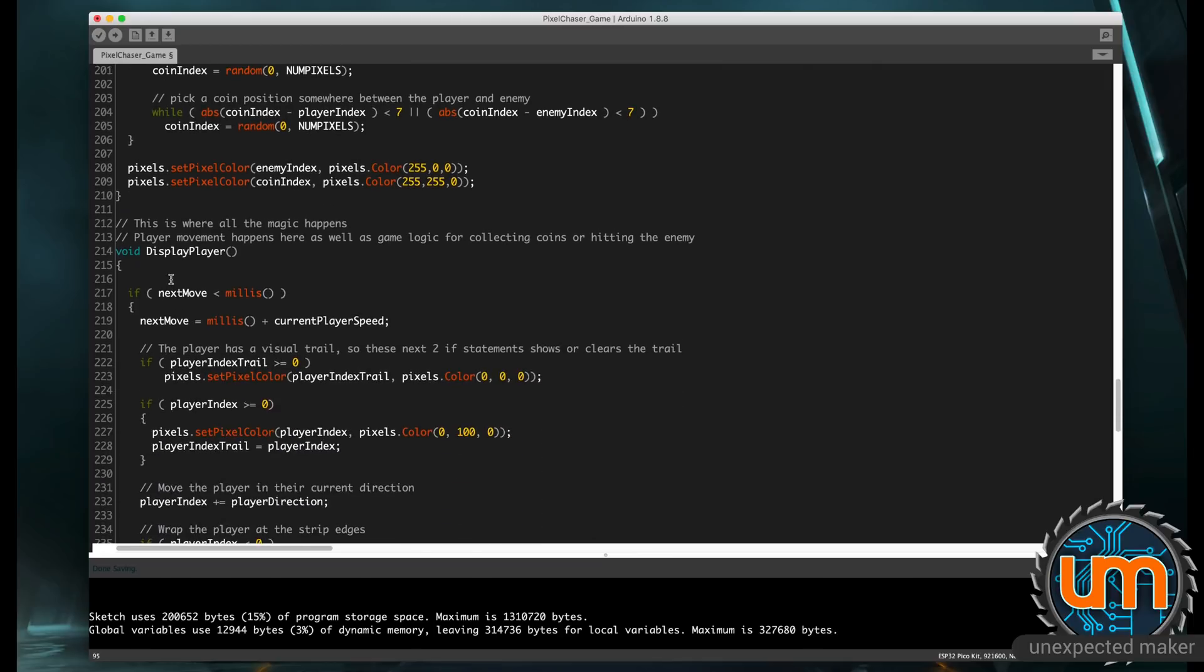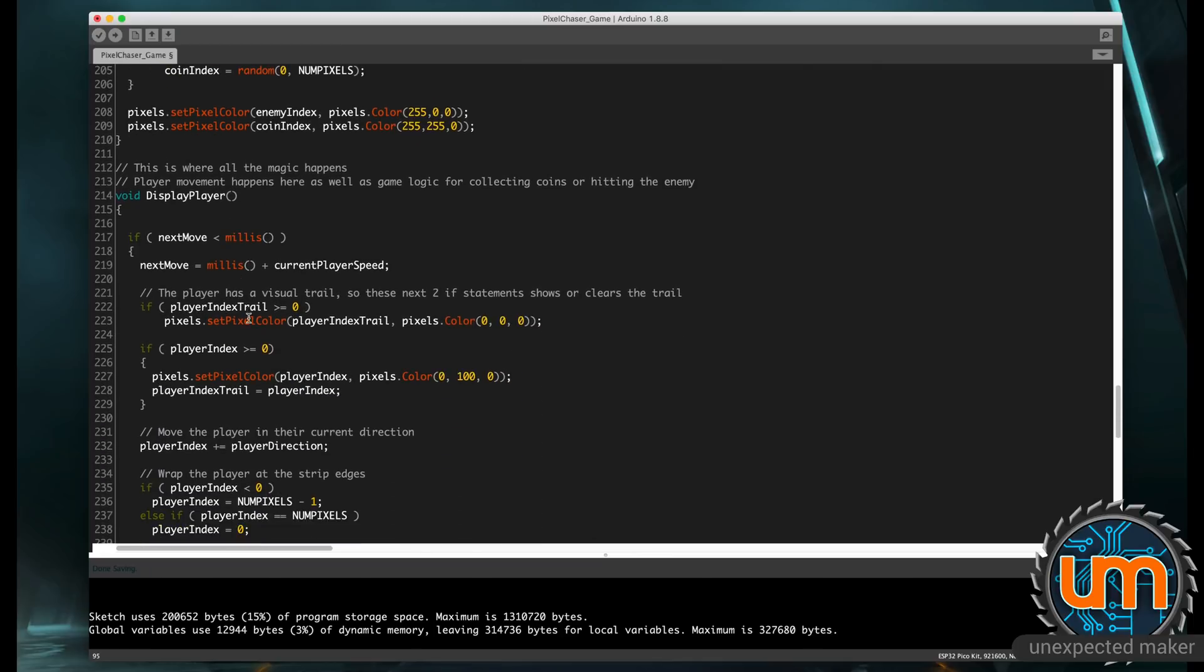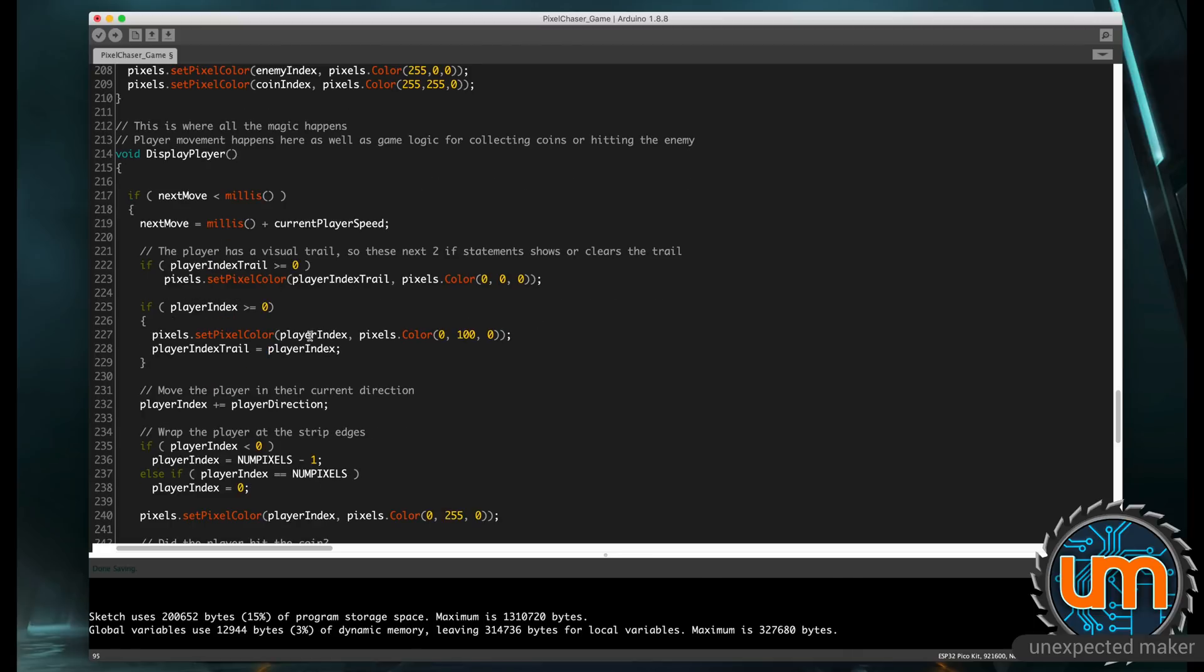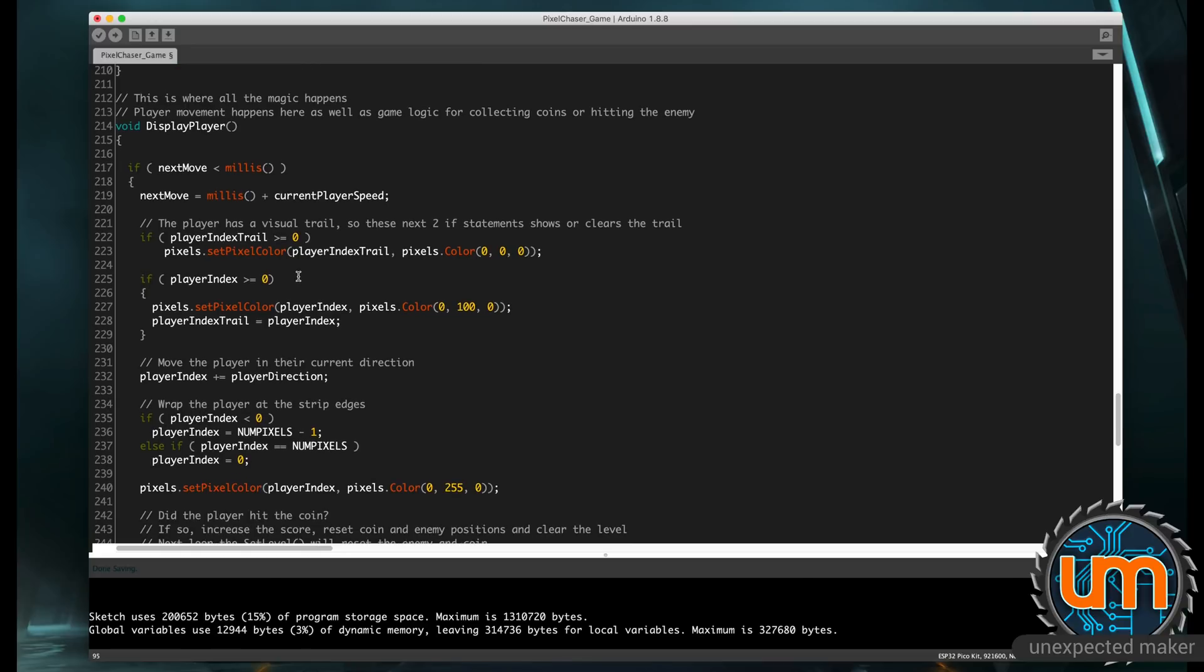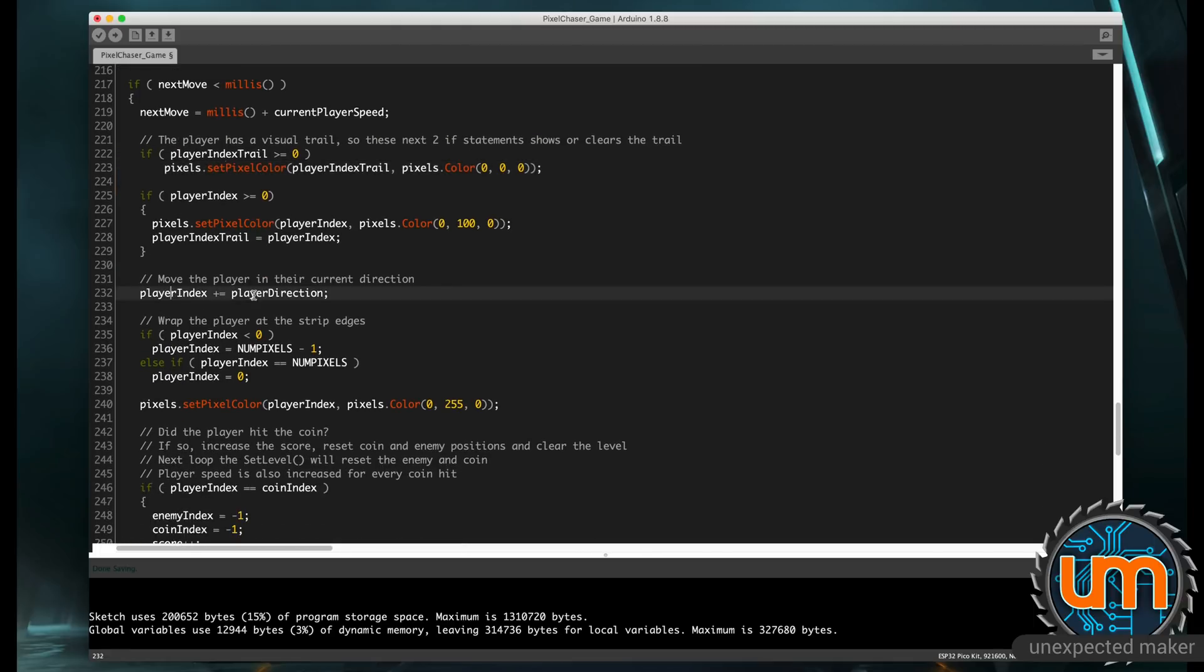The display player is where all the logic happens. It's running through and only runs every play speed loop, so it's not running at 60 frames a second. It'll get faster as the player gets faster. The actual player pixel has a trail behind it, and so the next two sections here adjust to do the trail. The player then gets moved by its player direction. Remember,